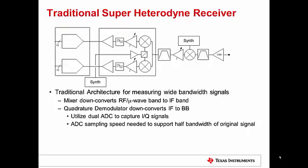With the quadrature demodulator, we'll be separating it into the I and Q channels with a dual ADC to capture each one of those channels. The ADC only needs to support half the bandwidth of the original signal, so it makes the ADC capture a little bit easier in this case for wide bandwidth signals.